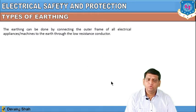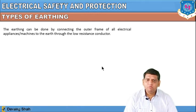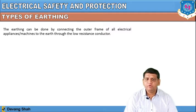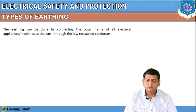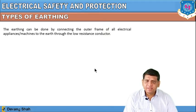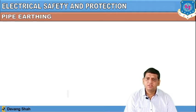There are two types of earthing. Earthing is done by connecting the outer frame of all electrical appliances or machines to the earth through a low resistance conductor. Earthing provides a low value of resistance so that the maximum amount of current passes through the earth and the human body is saved. The two main methods are pipe earthing and plate earthing.